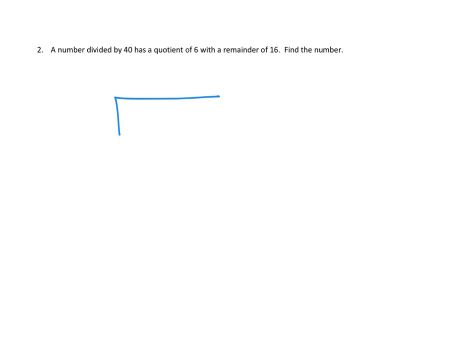Where would all these numbers go? A number, I don't know what number is. A number is divided by 40, so the divisor's 40. Number's divided by 40 and has a quotient of 6. So that means the 6 must be up here.